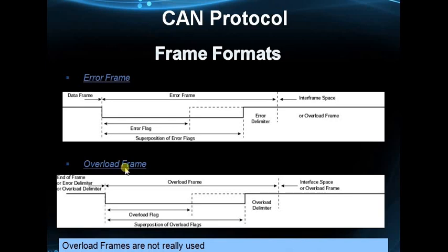The overload frame is also similar to the active error frame — it is 6 consecutive dominant bits followed by 8 consecutive recessive bits. The overload frame is used by slower nodes. In reality, overload frames are not really used so much, but they can be used for slower nodes.